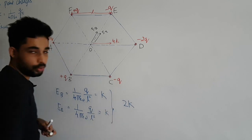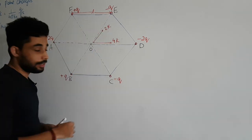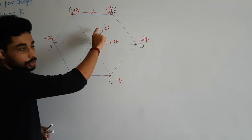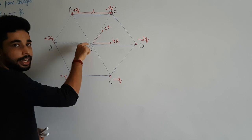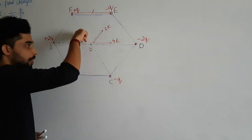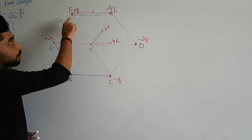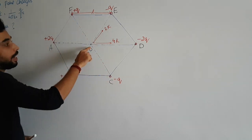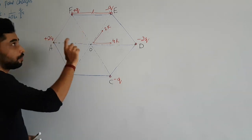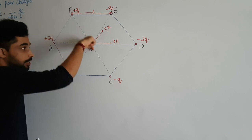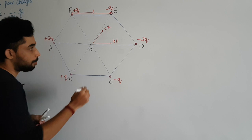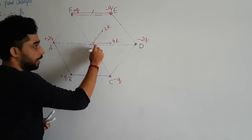For the remaining two charges, the same logic applies. The charge plus q at one vertex gives field magnitude k pointing radially outward at O, and the charge minus q at the opposite vertex gives field magnitude k pointing in the same direction. Adding them gives another 2k in that direction.